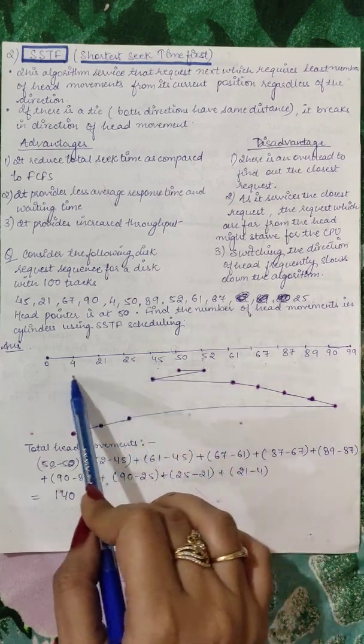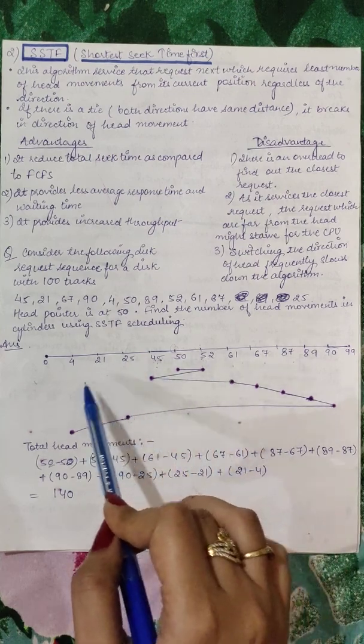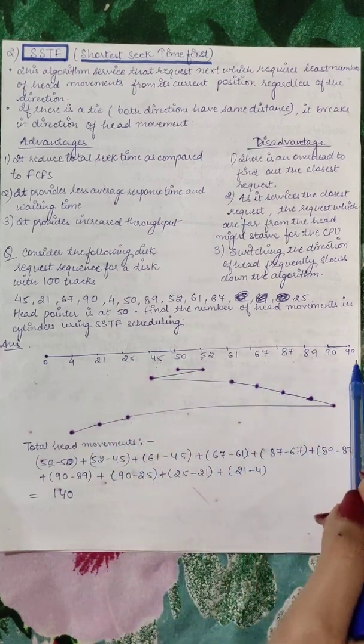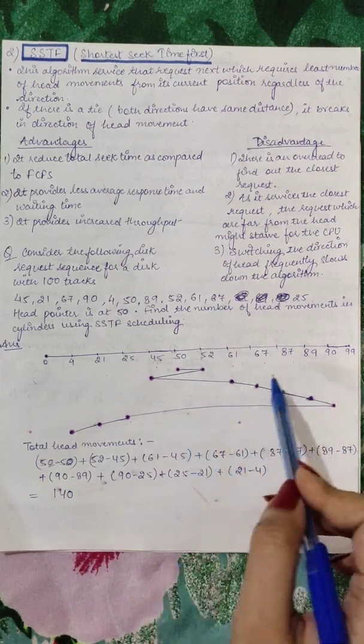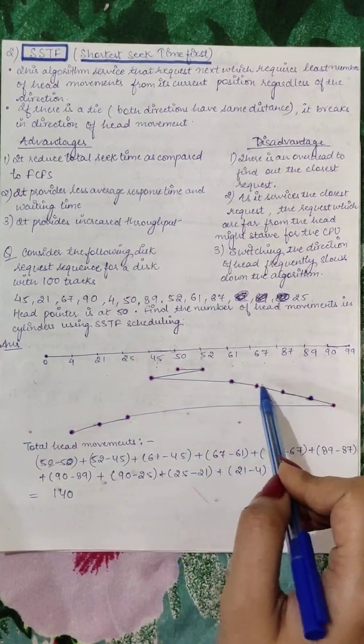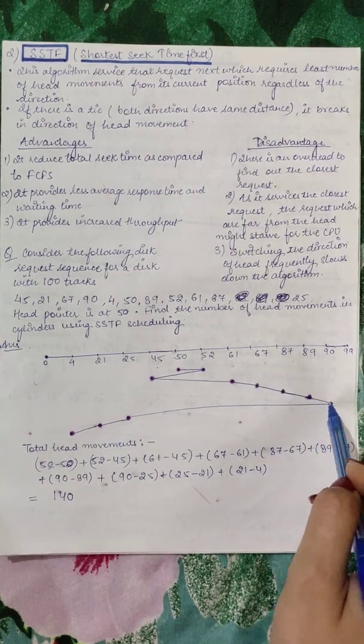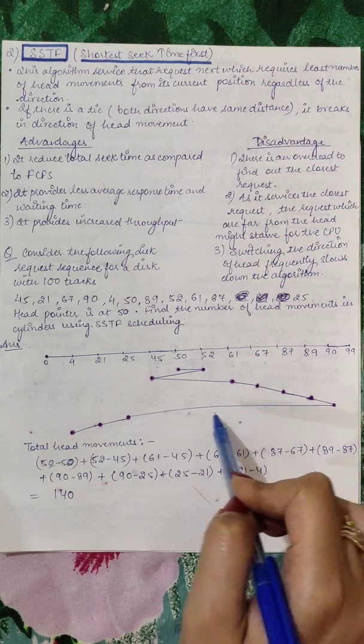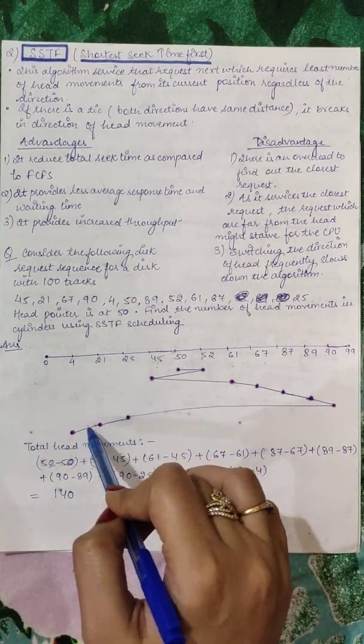Now, from 61, everything is very far on the left side. 4, 21, 25, it's a lot of distance from 61 as compared to the right side. So now we will see all the movement to the right, because it's closer. So let's travel from 61 to 67, then 67 to 87, then 89, then 94. After 94, we will move in reverse direction: 25, 21, and 4.